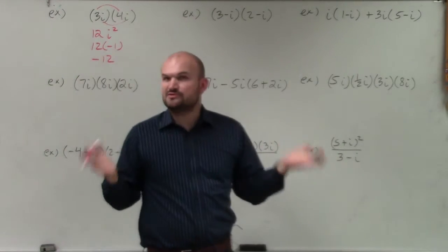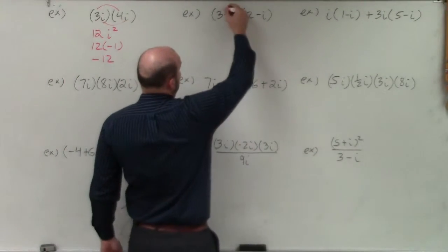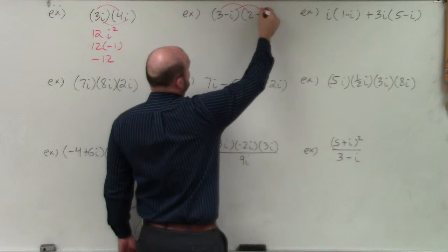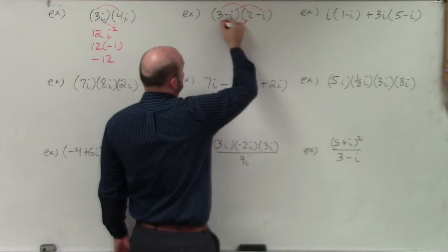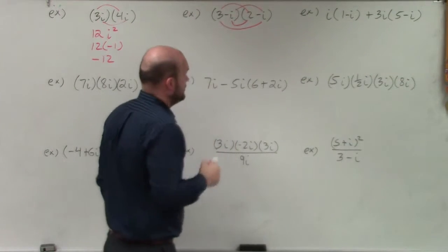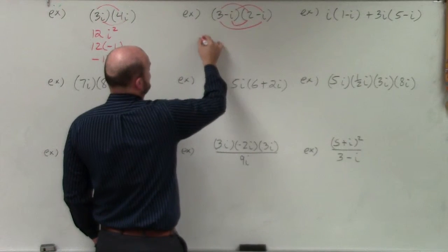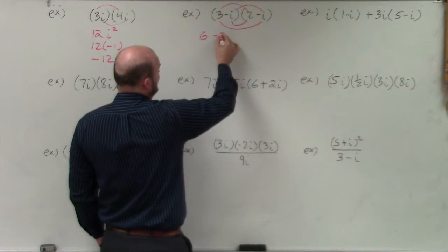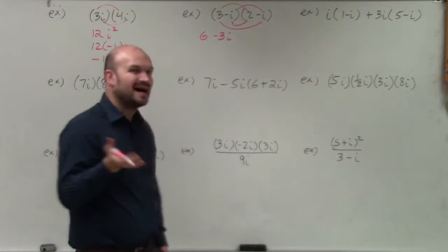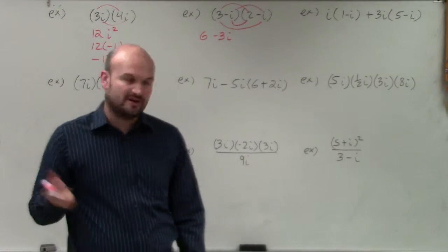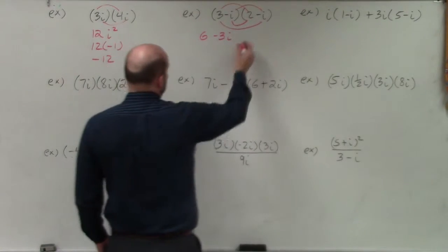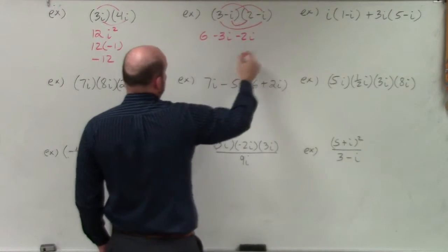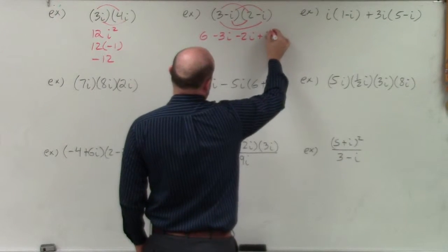Over in this case, we're going to want to use FOIL or the box method. We're multiplying here: multiply the first terms, multiply the last, multiply the inner, and multiply the outer. So 3 times 2 is going to be 6. 3 times negative i is going to be negative 3i. Treat the i's when applying our operations kind of like variables. 2 times negative i is going to be negative 2i. And negative i times negative i is going to be a positive i squared.